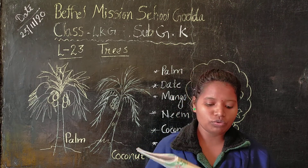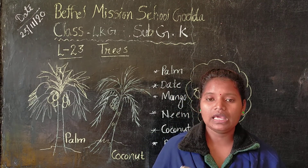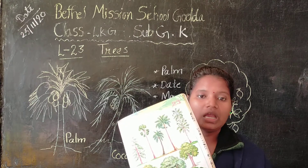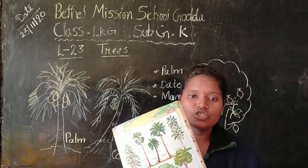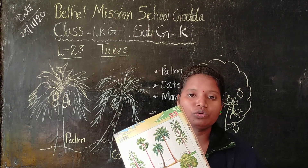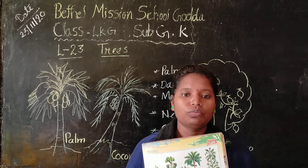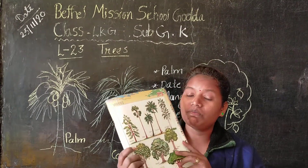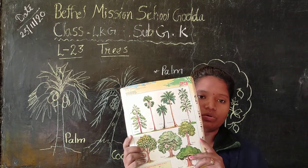So if you have a GK book, you can take out page number 23, and while I teach you, you can go through your book and see the images also.